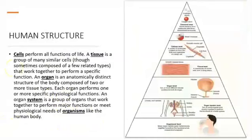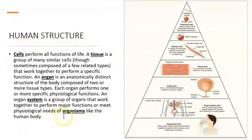Human structure is important because our body is organized — it has a certain organization. An organism, such as a human, is composed of systems. Systems are composed of organs, organs are composed of tissues, and tissues are composed of cells.